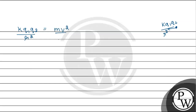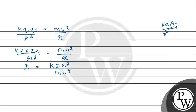So k·q1·q2 / r² = mv² / r. Here, the value of q1 is e (charge on electron in magnitude), and the value of q2 is Z·e (atomic number times charge on electron, since proton and electron charge magnitude is the same). So k·Z·e² / r² = mv² / r. Cancelling one r, the formula for r becomes: r = k·Z·e² / (mv²).